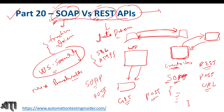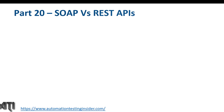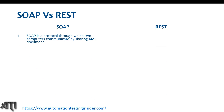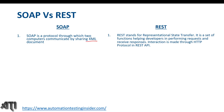Moving to the next slide: SOAP is a protocol through which two computers communicate by sharing XML documents — it supports only XML format. REST (Representational State Transfer) is a set of functions helping developers perform requests and receive responses; interaction is made through the HTTP protocol. SOAP has strict protocols and rules, while REST is an architectural pattern.